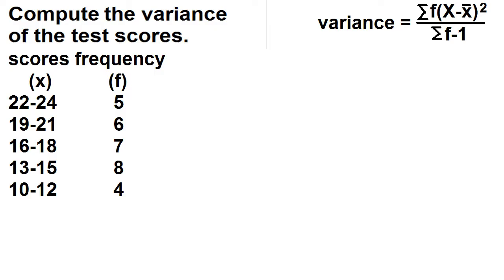The total frequency is 5 plus 6 plus 7 plus 8 plus 4, which is equal to 30. The total frequency minus 1 equals 30 minus 1, which is equal to 29.